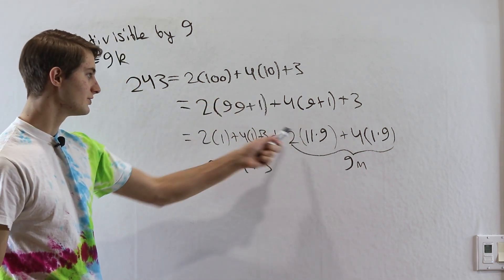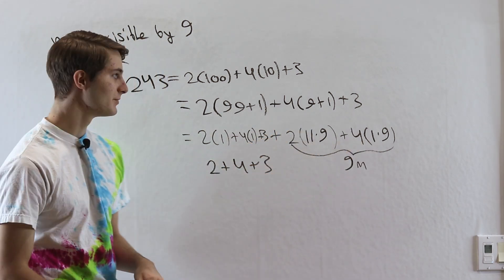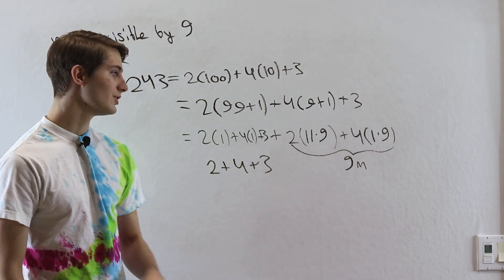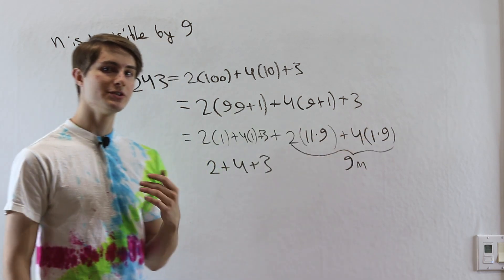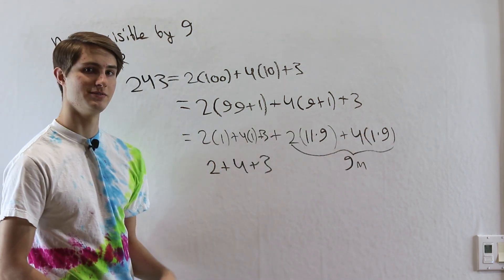But notice 99 is a multiple of 9, and of course 9 is also a multiple of 9. So this part that we have over here, not only is it a multiple of 3, it's also a multiple of 9. So we can just as easily ignore this part when we're looking at divisibility by 9, and that leaves us only with the sum of the integers.